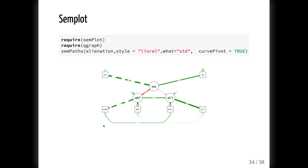We can also plot that model. It's a slightly low-resolution graph, but we can see socioeconomic status, educational attainment and occupational status, alienation in 67 and 71, and the correlated residuals between powerlessness 67 and powerlessness 71. We've asked it to display standardized effects on the output. Have a closer look, and again you can use semPaths to change the layout and all the options.